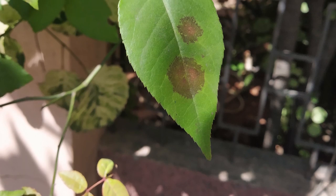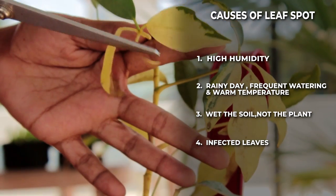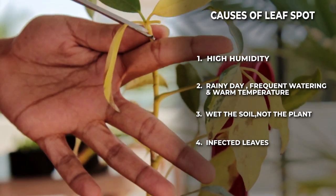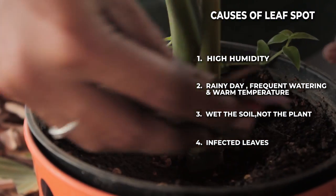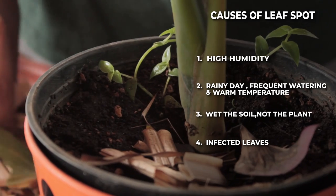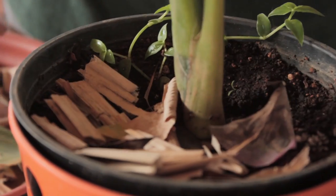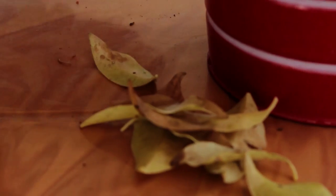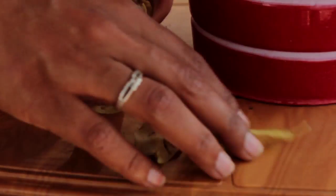Initially, when you observe small circular spots on leaves, please collect them, burn them, and throw them away from your garden. Do not use those infected leaves for your compost bin or for mulching, because those infected leaves carry disease-causing organisms. If they come in contact with other plants, it will spread disease to other plants. That's why, when you collect those infected leaves, please throw them away from your garden or burn them.